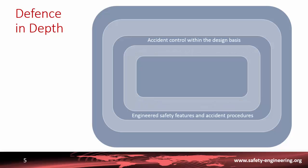The third level is the control of accidents considered in the design basis. If an accident occurs, such as a loss of coolant accident, safety systems such as safety injection, containment systems, or emergency boronification systems are designed to limit the consequences and keep the plant within the design basis without significant consequence.